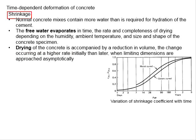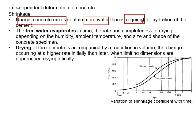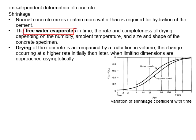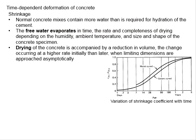Next, we discuss shrinkage. The normal concrete mix contains more water than is required for the hydration process of the cement. This leads to free water in the concrete mix. This free water evaporates over time, where the rate and completeness of evaporation and drying depend on the humidity, ambient temperature, size, and shape of the concrete specimen.